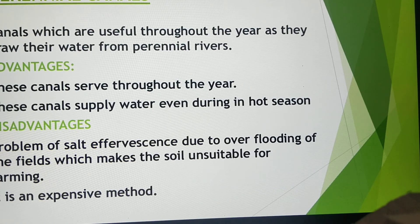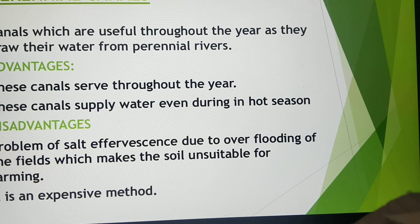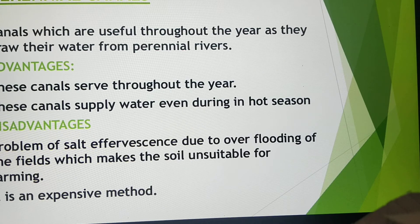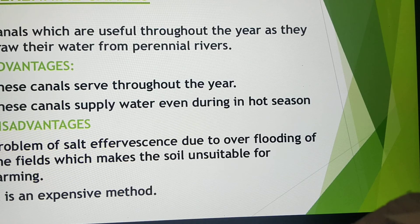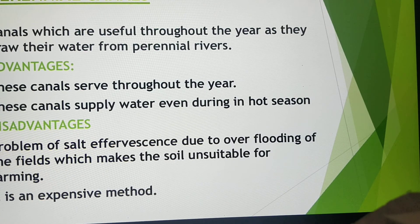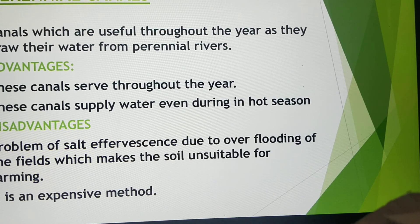Next we have perennial canals. These canals are useful throughout the year as they draw water from perennial rivers, artificial lakes, or barrages constructed across rivers. Advantages: they serve throughout the year, so agricultural production in areas of less or uncertain rainfall has increased considerably; they supply water even during the hot season so cultivation of some crops can be carried on throughout the year. Disadvantages: there is a problem of soil salinity due to overflowing and flooding of fields, which makes the soil unsuitable for farming, and water logging occurs in unlined canals as water seeps into adjoining areas turning them into swampy areas.